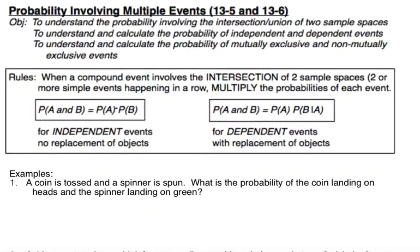When we have independent events, I made a huge mistake on the note sheet — follow right now — where it says no replacement, independent should be with replacement. Because we're replacing. The most common example we're going to look at here would be drawing marbles from a bag. You draw a marble out, you replace it, and therefore that first marble being drawn out is not affecting the second marble being drawn out. They're independent events.